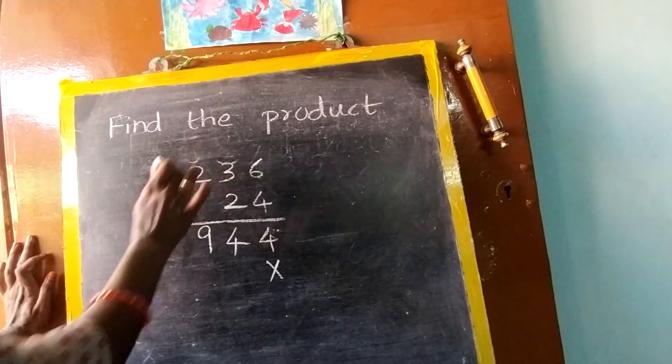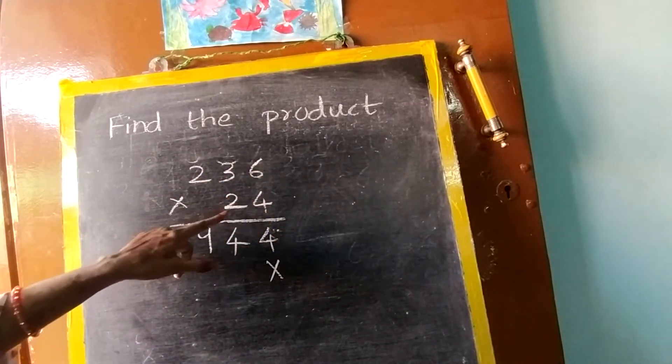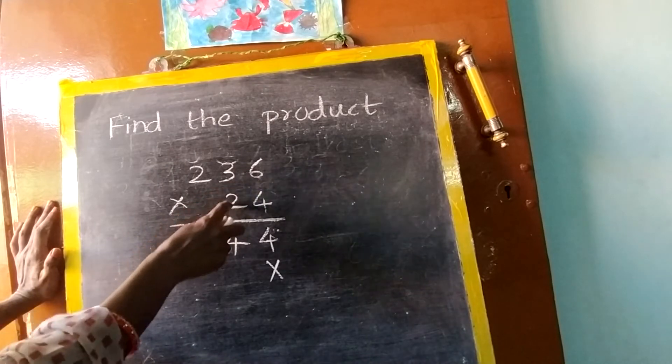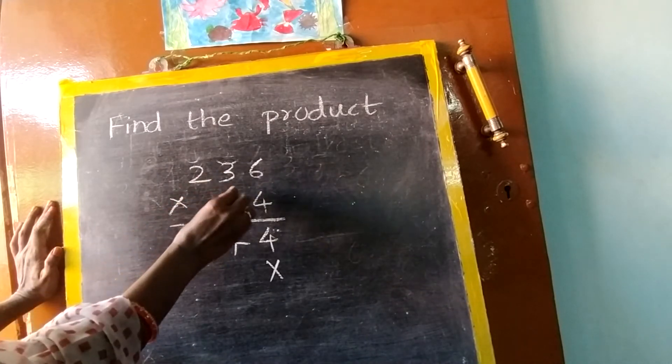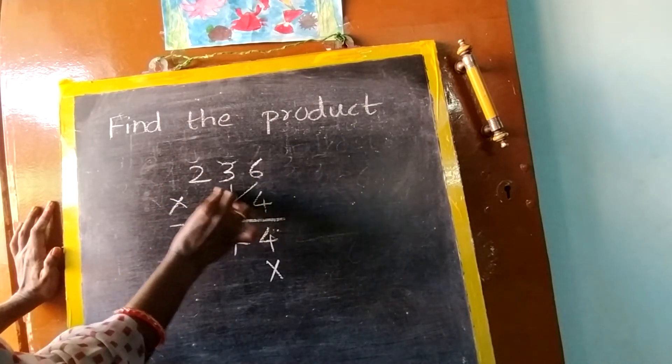Now we will start from the next. Now forget this 4, you will see 2, the same rule. First here, then here, then here. Always it will go like this. 1, 2, 3.